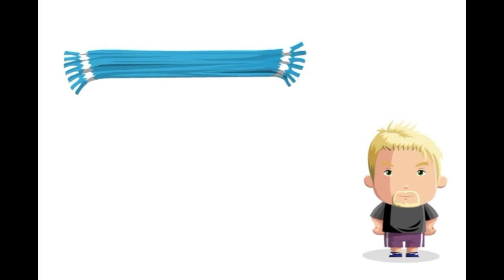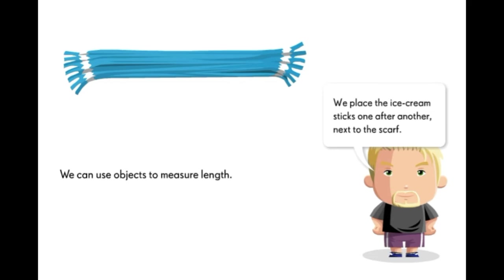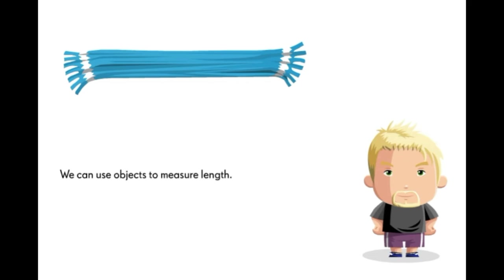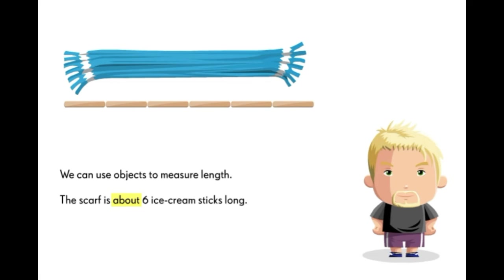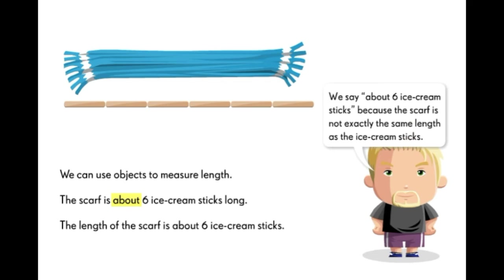Let's measure the length of the scarf with some ice cream sticks. We can use objects to measure length. We place the ice cream sticks one after another next to the scarf. One, two, three, four, five, six. The scarf is about six ice cream sticks long. We say about six ice cream sticks because the scarf is not exactly the same length as the ice cream sticks.